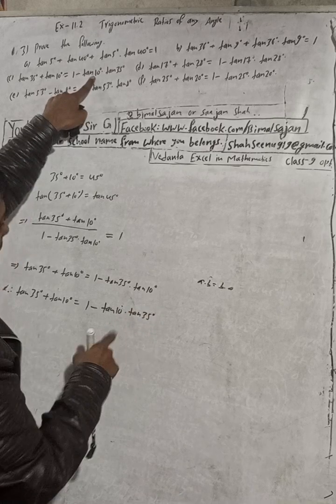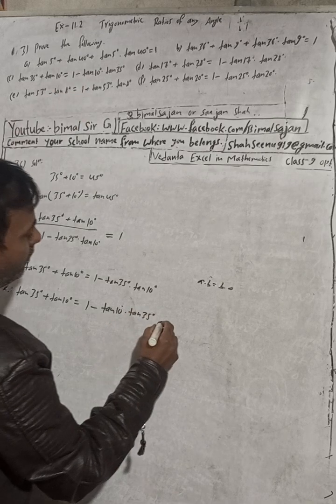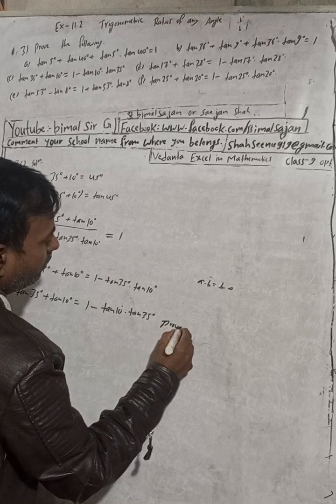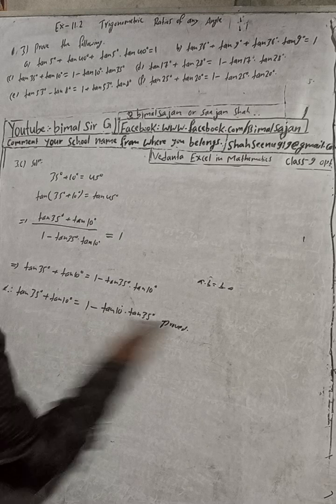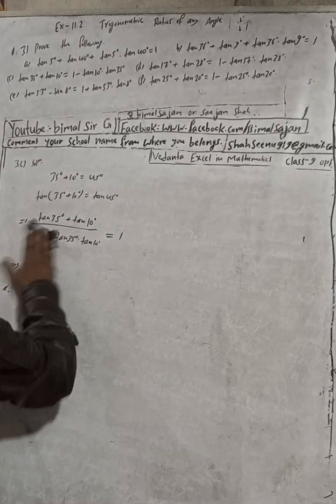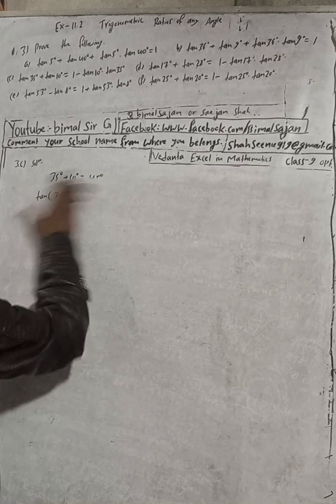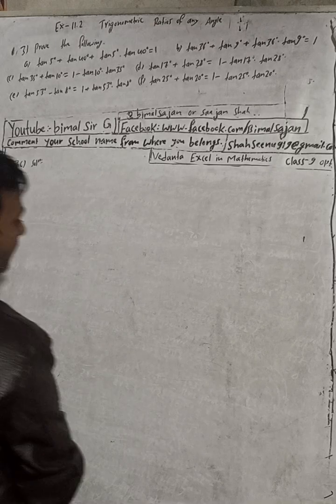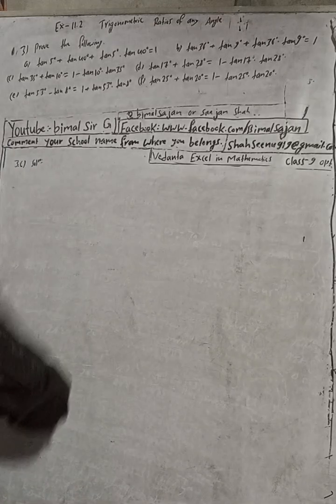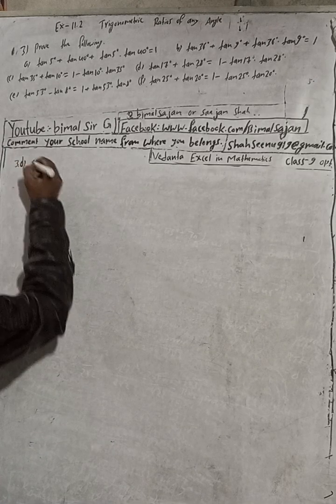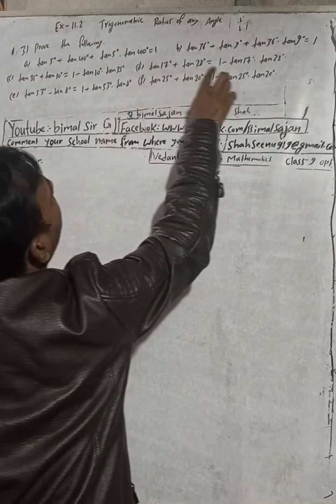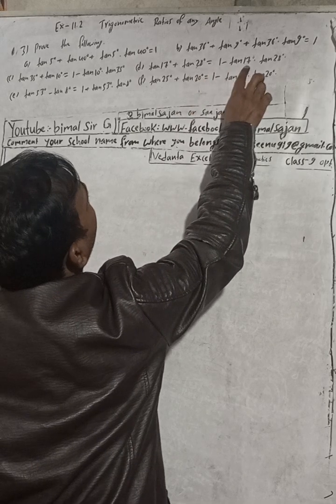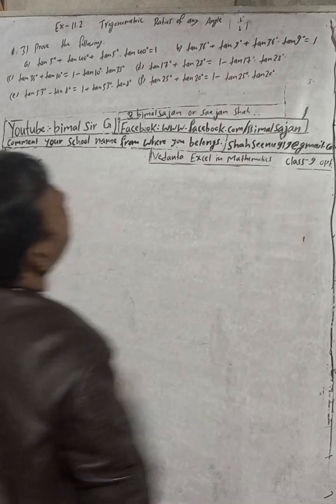Part D: Prove tan17° + tan28° = 1 − tan17°·tan28°.